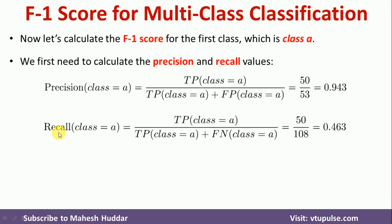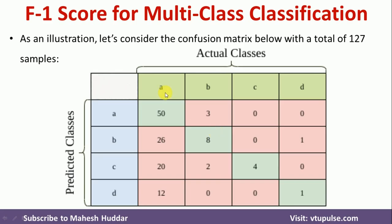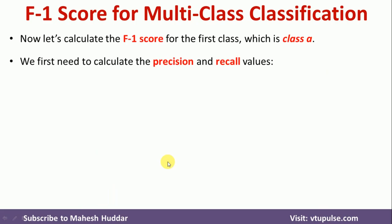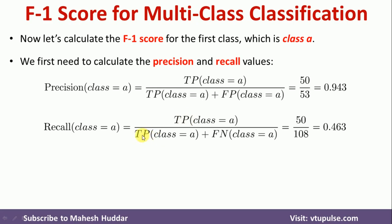For recall when class is equivalent to A, the formula is true positive divided by true positive plus false negative. The true positive is again 50. For false negatives: 26 examples are of type A but classified as B, 20 examples of type A classified as C, and 12 examples of type A classified as D. So the total false negative is 26 plus 20 plus 12, which equals 58. Therefore, recall for class A is 50 divided by 50 plus 58, which equals 50 divided by 108, giving 0.463.